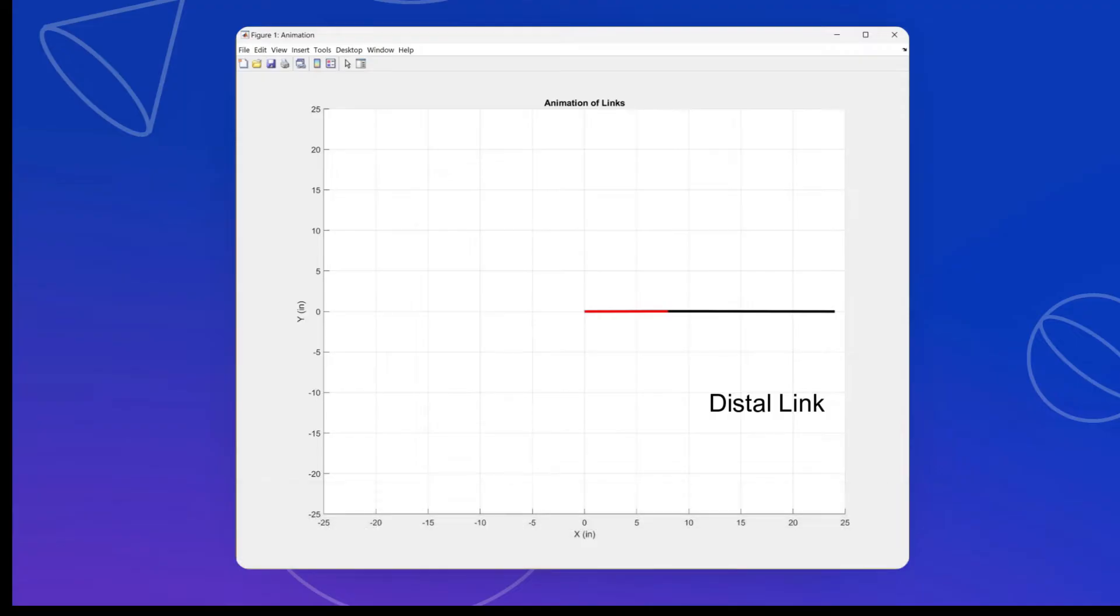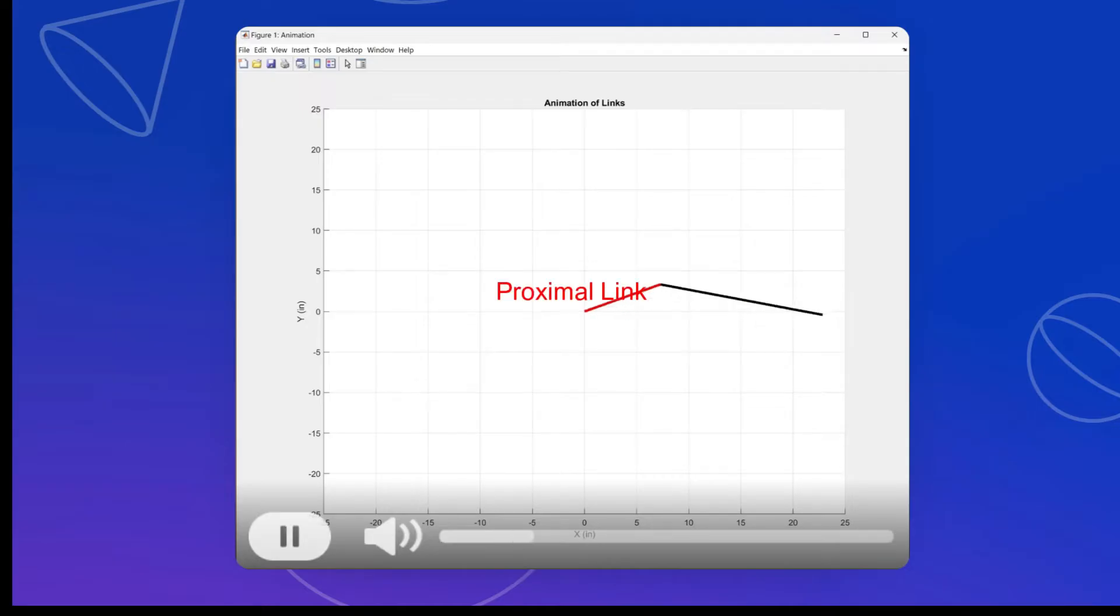And then what I did was we are driving this proximal link, the arm link, with a constant torque around. So watch, I'll play it again. And there's a constant torque being supplied at that spot. And through the whole entire motion that you're watching here, that torque is constant.